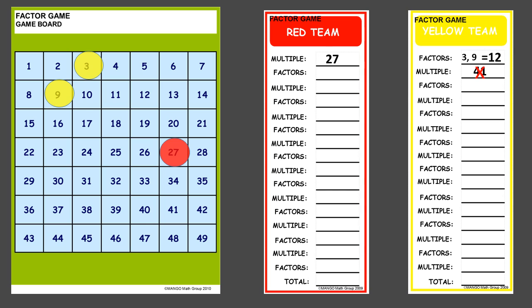It's the other team's turn again and they choose the multiple 40, writing 40 on their board. The yellow team gets to find the factors that make 40. Let's say they cover the 4 and the 10, and the 5 and the 8. They write those up and add them together — 4, 10, 5, and 8 — getting a total of 27. That's not a bad score, but it's not as high as 40, so it's good for team red because they still have more points.